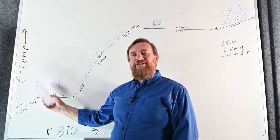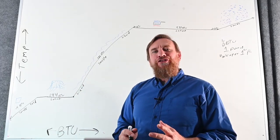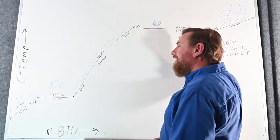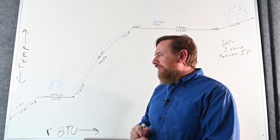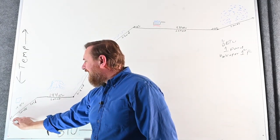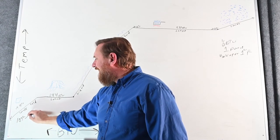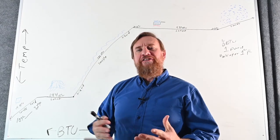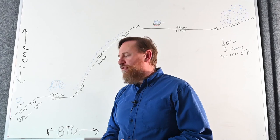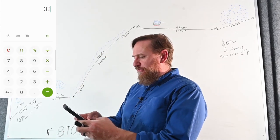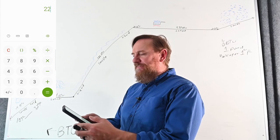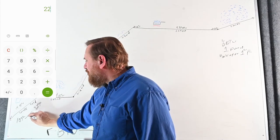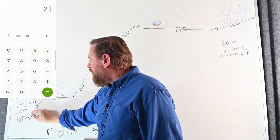Let's work through an example, taking one pound from below freezing all the way up to above the boiling point. We're going to start at 10°F solid ice. First, let's find our temperature change — going from 10°F to 32°F. We take 32 minus 10, and that gives us a 22°F temperature change, what we call a delta T.